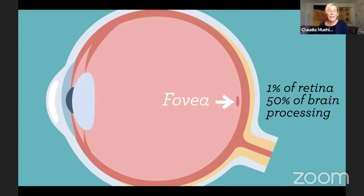You can only have perfect clarity in the fovea, this teeny tiny spot the size of a pinhead. Thankfully, your eyes can move in many different ways to give you both that perfect clarity and that big picture peripheral panoramic view. And the more relaxed you are, the more effortless your eye movements and the wider your peripheral field.